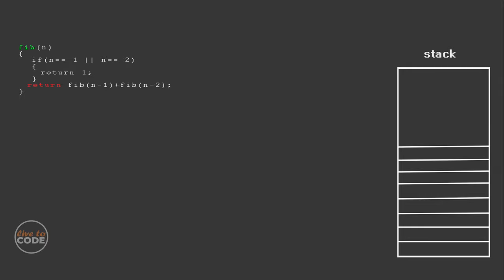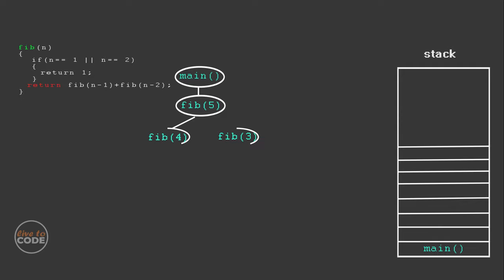This is the stack. The stack will track all the function calls. Our program will start from the main function. The main function calls the fib function with n value 5, and the main function will be pushed into the stack. Fib of 5 will call itself with n values 4 and 3, so fib of 5 will be pushed into the stack.